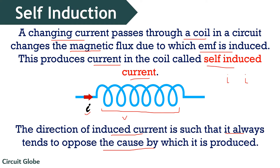Suppose I is the actual current and II denotes the induced current in the circuit. If the change is such that the actual current I is increasing with time, then the induced current II will try to retard this change in current. In this case, if the direction of the actual current is in this way, then in order to retard this actual current, induced current will flow in the opposite direction. While if the actual current I is decreasing with time, then the induced current will try to oppose the decaying nature of the actual current, and so induced current will flow in the same direction.